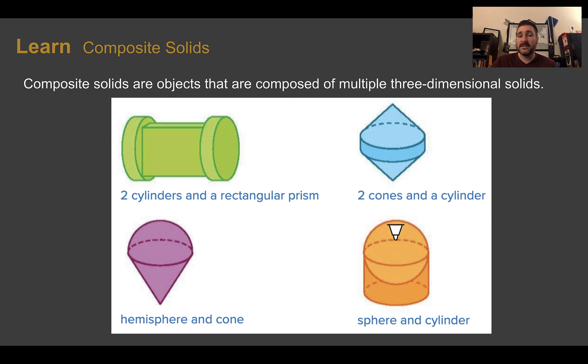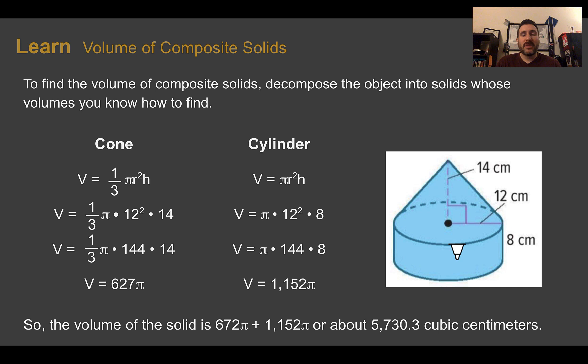And here, in orange, I can see that I have a sphere and a cylinder, or maybe, if this was a little darker, you could see that we have a hemisphere and a cylinder. So, some of these, you might be able to decompose, break it down into different ways to figure it out. In order to find the volume of our composite solids, we're going to decompose the object into solids where we know how to find the volumes, and then combine them back together.